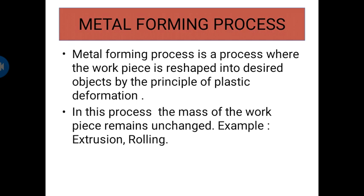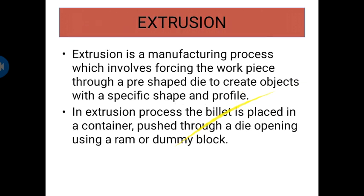Examples of metal forming processes are extrusion, rolling, and many other processes, but in your syllabus extrusion and rolling are covered. Extrusion is a manufacturing process which involves forcing the workpiece through a pre-shaped die to create objects with a specific shape and profile. A die is nothing but a piece of metal which is given a particular shape.